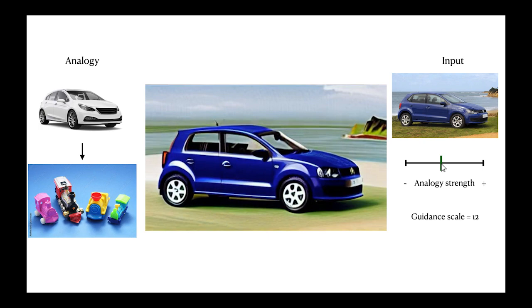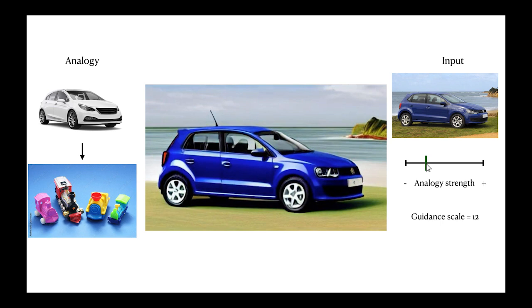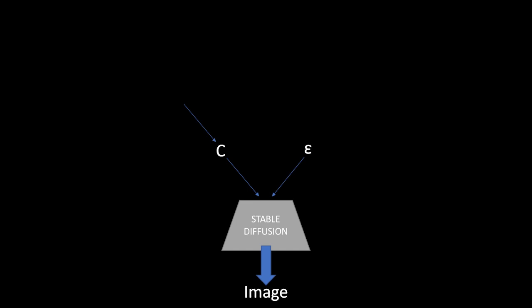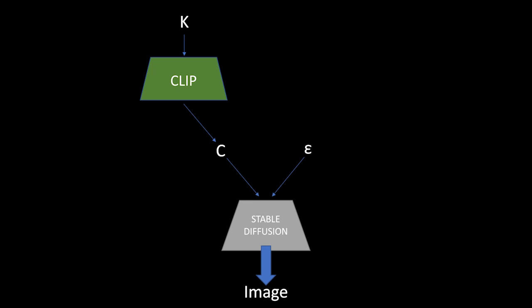Having done that, we find that naive projection into the conditioning of the stable diffusion model produces latent representations that translate into images which don't work with analogy vectors very well. For that reason, we propose altering the optimization objective by adding regularization. Since the conditioning tensor itself is normally the output of the CLIP model, we go a step further and impose an additional loss term on the token inputs, K, into CLIP itself that produce the conditioning C. This term introduces a large penalty for inferring long token sequences, which are less likely to produce a good, general semantic description.